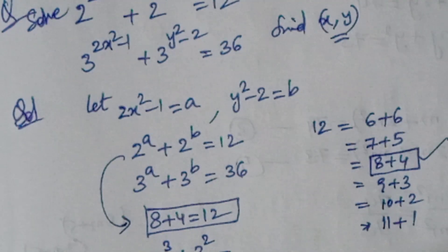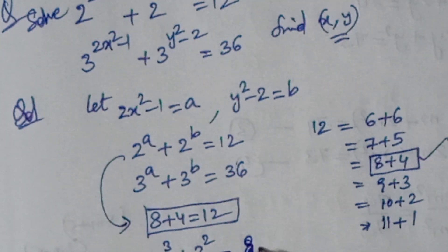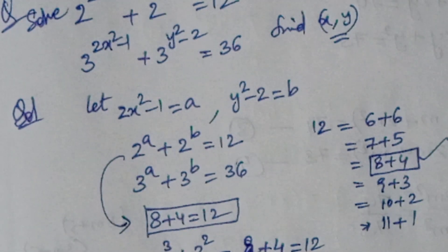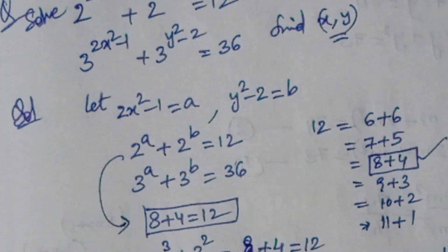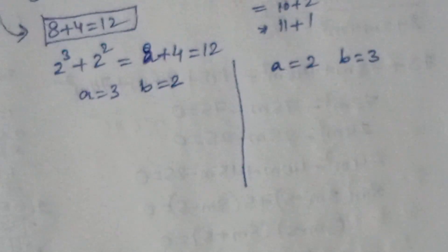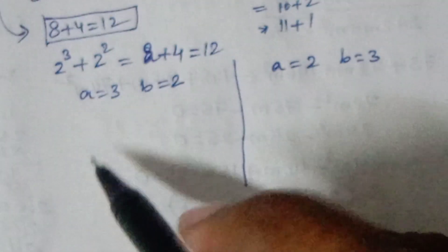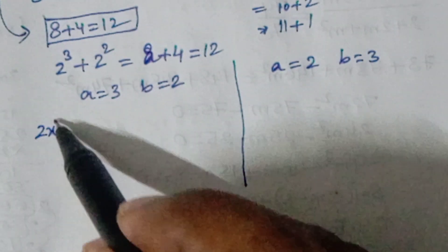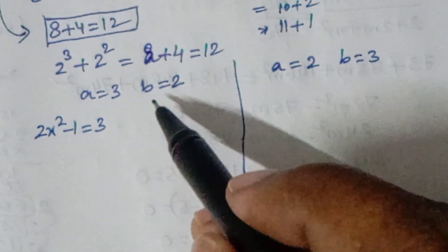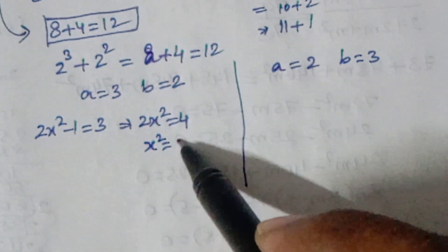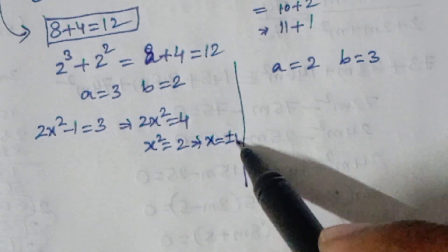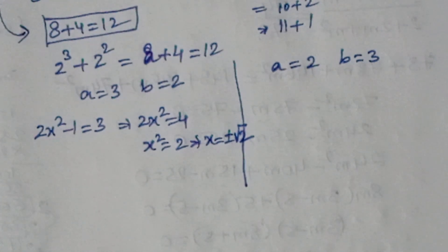In Case 1, a = 3 and b = 2. So 2x² - 1 = 3, which gives 2x² = 4, x² = 2, and therefore x = ±√2.